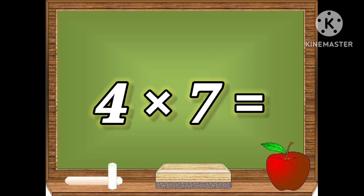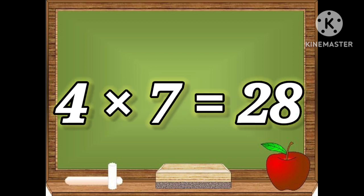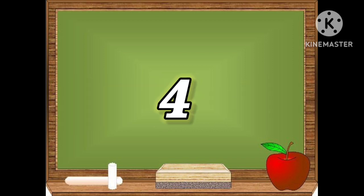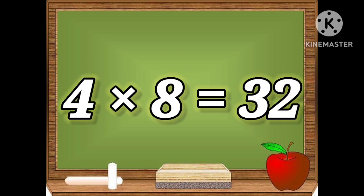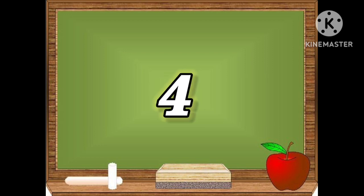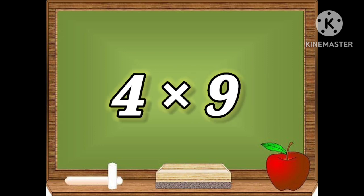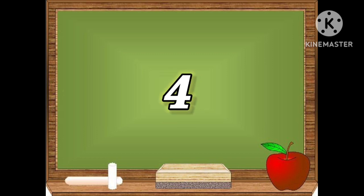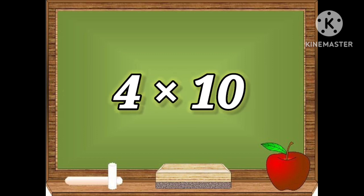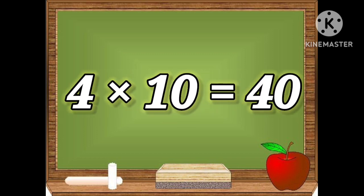Four sevens are twenty-eight. Four eights are thirty-two. Four nines are thirty-six. Four tens are forty.